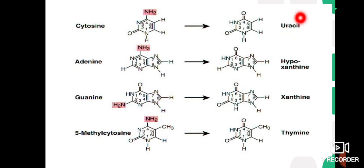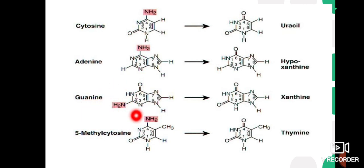Similarly, in adenine the removal of the amino group changes the structure into hypoxanthine. In guanine, removal of the amino group changes it into xanthine. In 5-methylcytosine it results in the formation of thymine. This is a serious kind of mutation caused by a physical agent, and the process is known as deamination — the removal of the amine group, which is the reason for mutation.